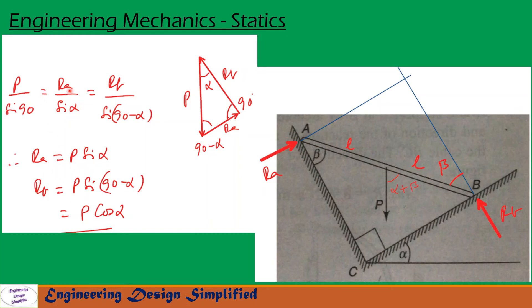And similarly, from first and third term, we can find RB equal to P sine 90 minus alpha. Sine 90 minus alpha can be written as cos alpha. So RB equal to P cos alpha.